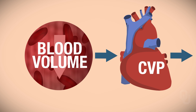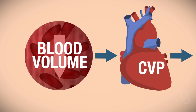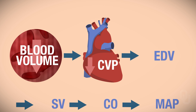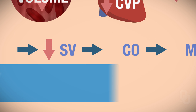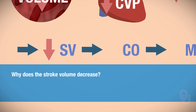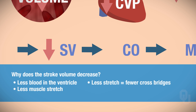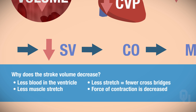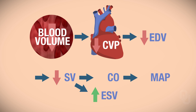Now let's switch it around. With a decreased volume of blood in the vessel, your central venous pressure decreases, end diastolic volume decreases, and stroke volume decreases. Why does stroke volume decrease? There's less blood in the ventricle, so less muscle stretch, and if there's not as much stretch, there are fewer cross bridges forming, which decreases the force of contraction and therefore decreases stroke volume. Since stroke volume is decreased, end systolic volume will increase, cardiac output decreases, and MAP decreases as well.